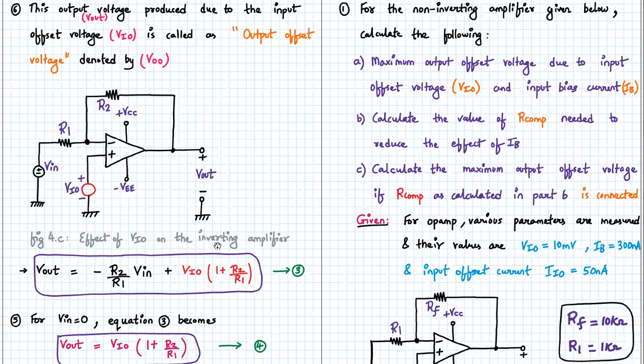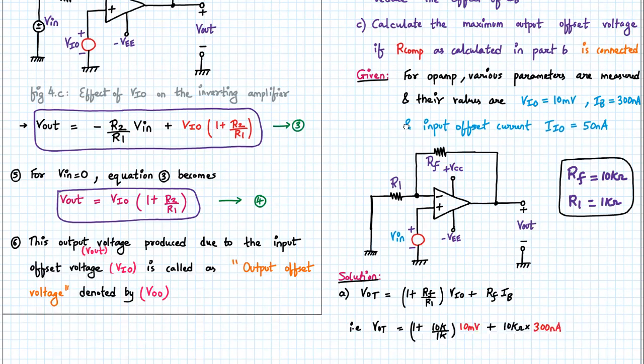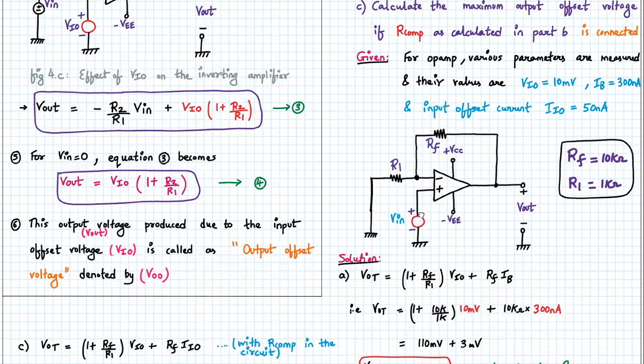Next we will see the effect of VIO on the inverting amplifier. We have already seen this and derived this. So Vout will be given by minus R2 upon R1 into Vin, plus this additional term in red color will be due to the contribution of input offset voltage. That is, Vout is equal to VIO into 1 plus R2 upon R1.